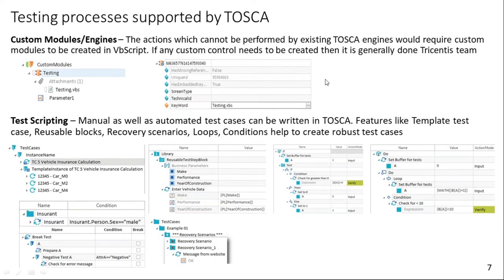Tosca is built on C# as a programming language. You can write your own code in Tosca using VBScript or C#, called custom modules or custom engines. You attach the code to a module and whatever is written in the code will be executed by Tosca. For example, you can write a script that loops through an Excel file. If you know coding and love coding, you can do this in Tosca.